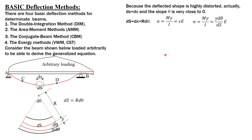Since σ = My/I also equals strain = y dθ/ds, and because ds is practically equal to dx, we can cancel y to obtain M/EI = dθ/dx. Furthermore, dθ/dx = dθ/ds (with ds replaced by dx) equals 1/R. Therefore M/EI is the reciprocal of the radius of curvature: M/EI = 1/R.